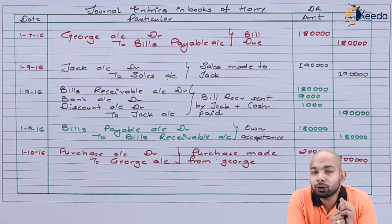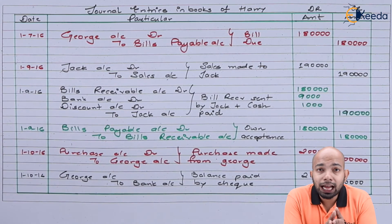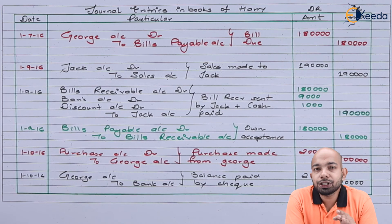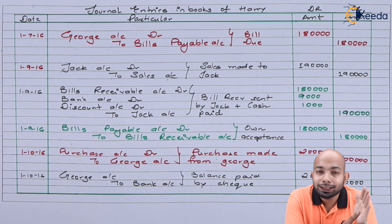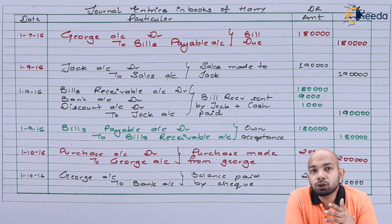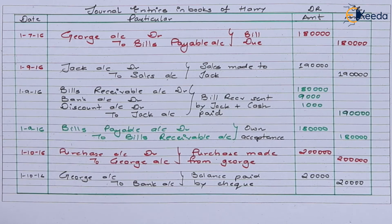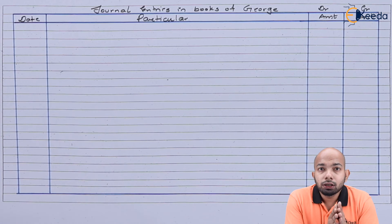That marks the closure of Harry's book entries. When the bill circulates among multiple parties and comes back around to the original acceptor, you cancel that acceptance and pay only the remaining balance. Similar entries will now be prepared in the books of George — all entries remotely or completely related to George.